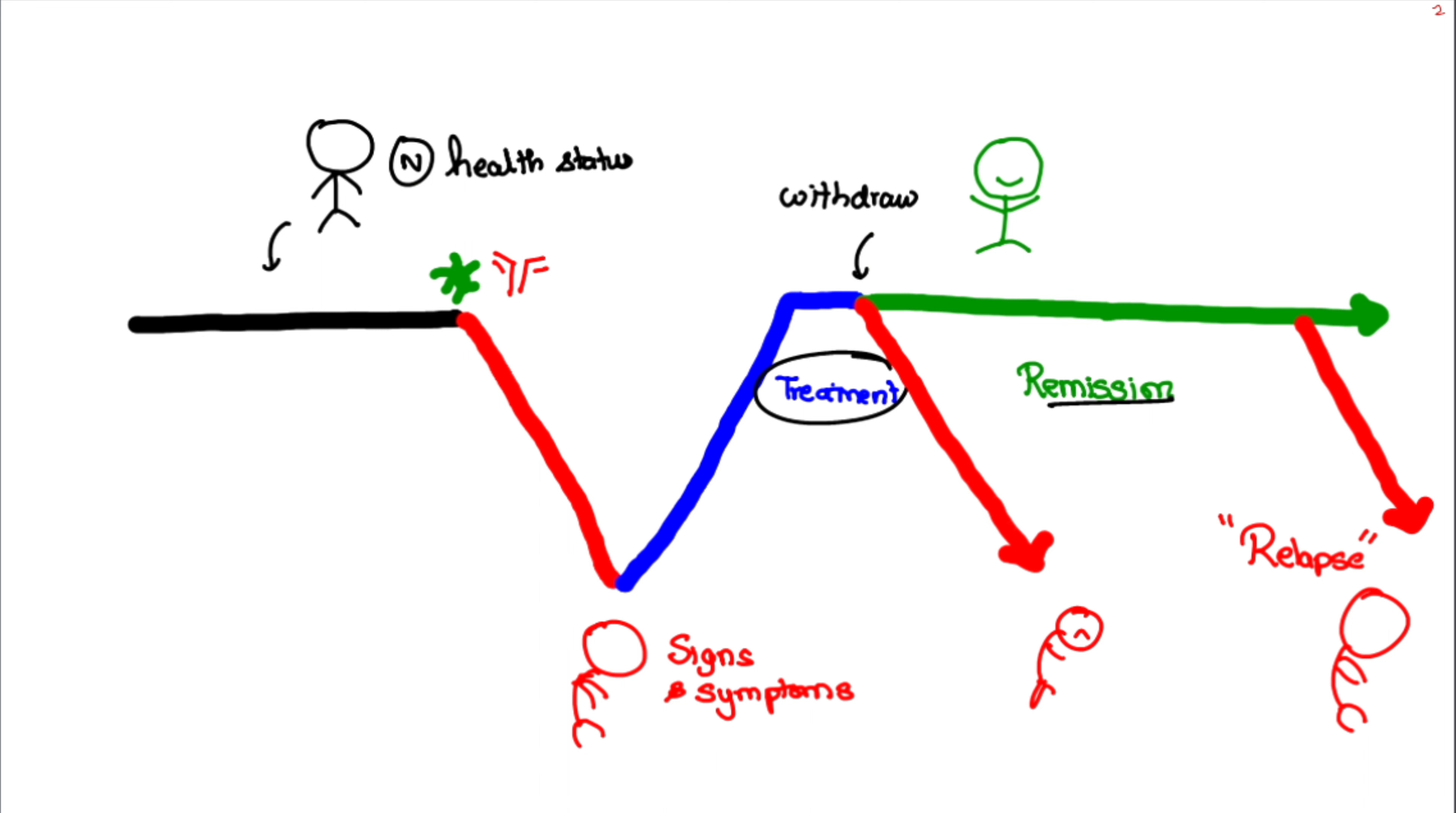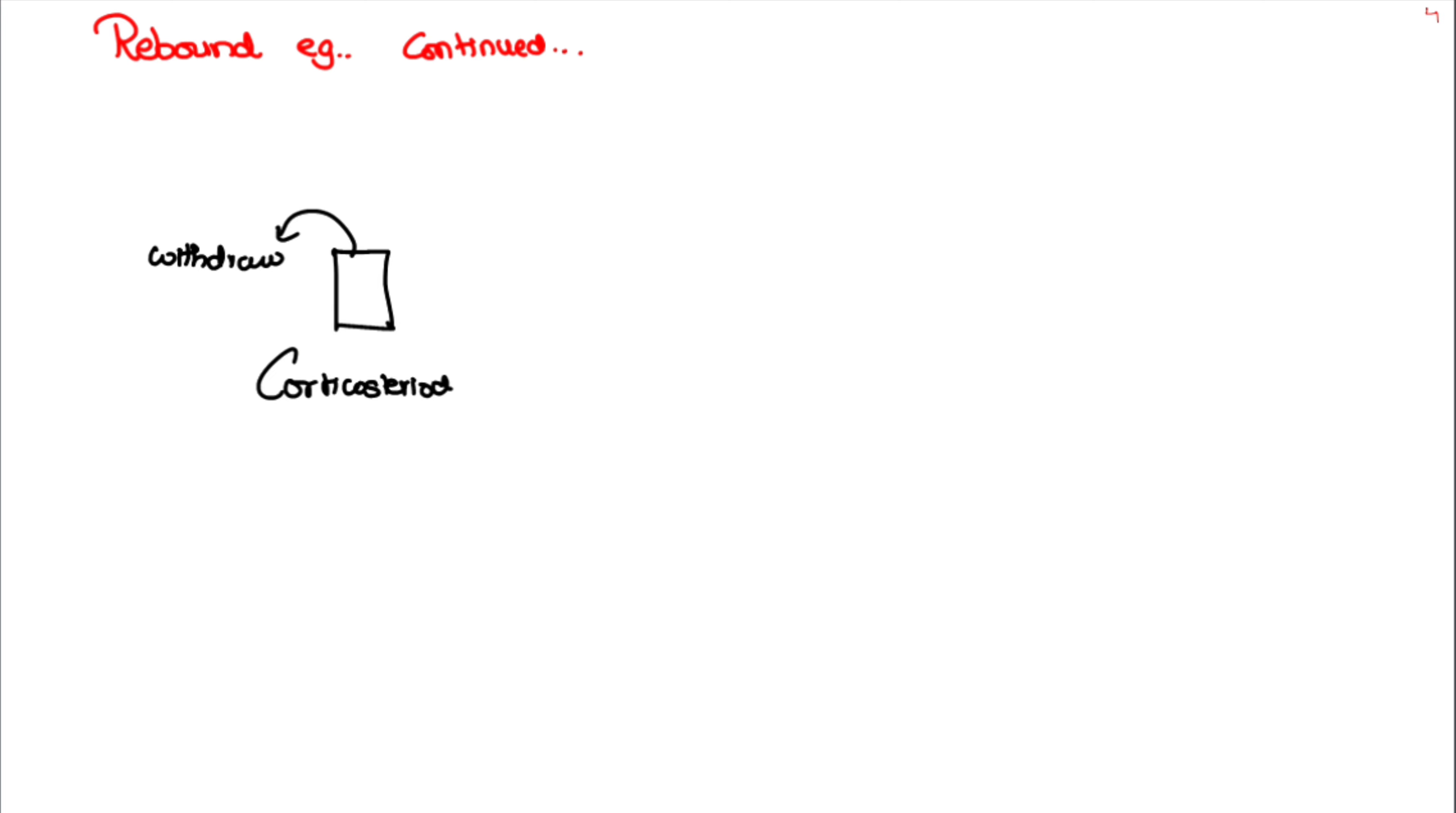The name given for this phenomenon is rebound. For example, abrupt withdrawal of high potent corticosteroids like clobetazole for psoriasis can cause a much more severe case of psoriasis to develop.